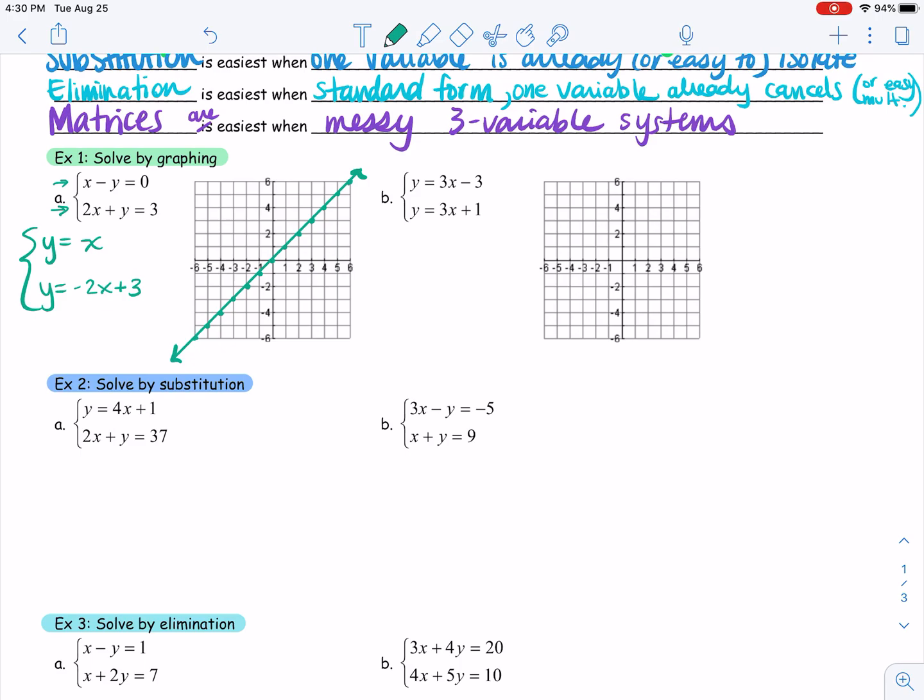And the second equation has a y intercept of positive 3 and a slope of negative 2. So I could go up 2 left 1 or down 2 right 1, and continue that slope pattern, and then again connect my dots. So we have two lines here. Do we have a solution? Yes, how many? One. What is that solution? It's where those lines intersect, which is at the point 1 comma 1. Two lines, they intersect, that's one solution. What is that solution? That point of intersection at 1, 1.